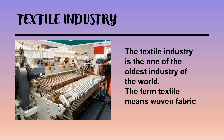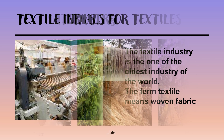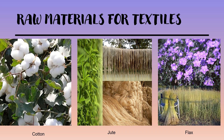Next we come to the textile industry. The textile industry is one of the oldest industries in the world. The term textile means woven fabric. The raw materials used in the textile industry are of three types. They can be obtained from plants, like cotton, jute and flax.